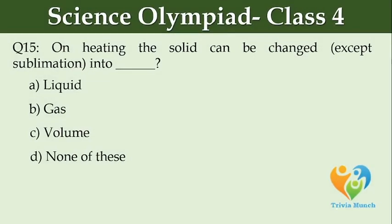On heating, the solid can be changed — except sublimation — into dash. Option A: Liquid, Option B: Gas, Option C: Volume, Option D: None of these.